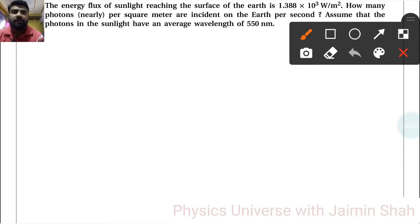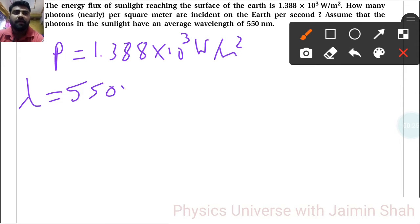The energy flux of sunlight reaching the surface of the earth is P = 1.388 × 10³ W/m². How many photons per square meter are incident on the earth per second? Assume that the photons in the sunlight have an average wavelength of 550 nanometers, so λ = 550 nm.